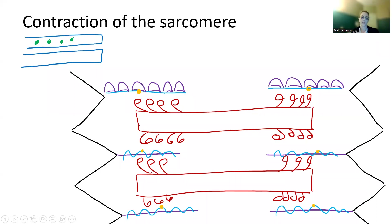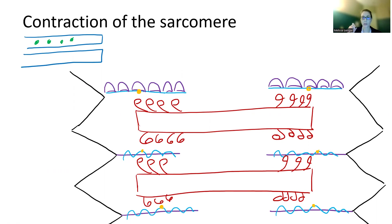The last thing we did, we were looking at synaptic transmission and how synaptic transmission is going to cause the inside of our muscle to become more positive. So we're going to go up to like plus 30 millivolts because sodium rushed in.